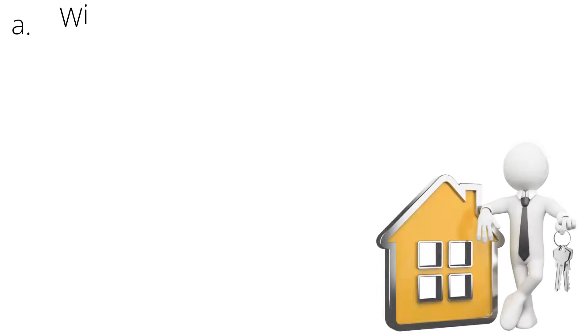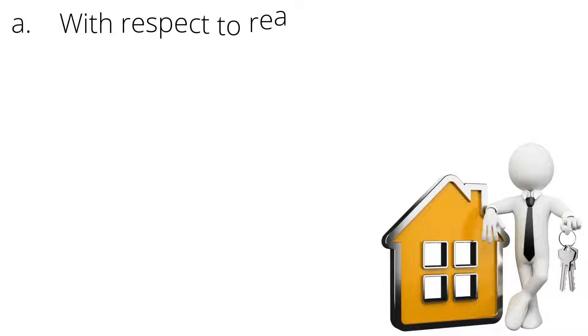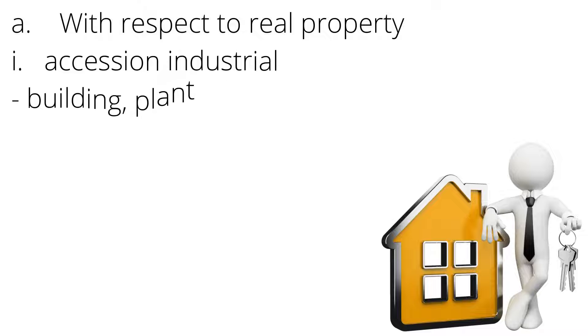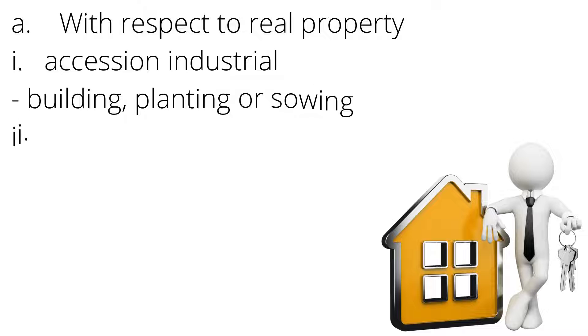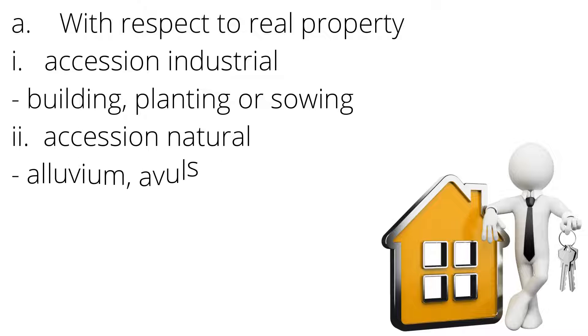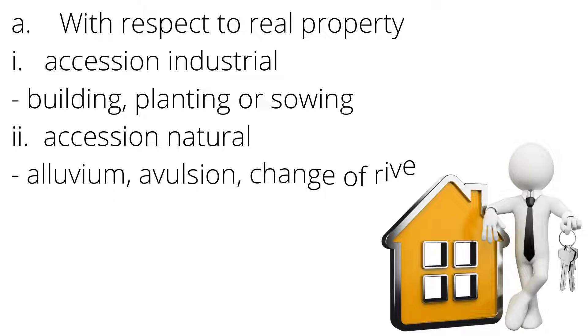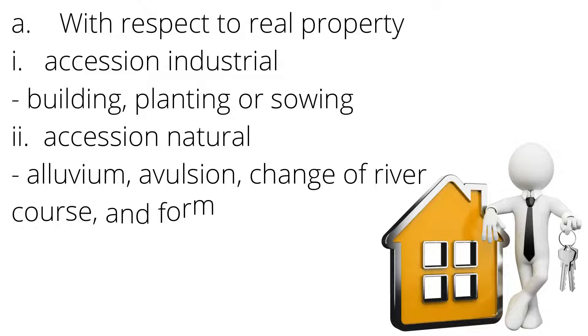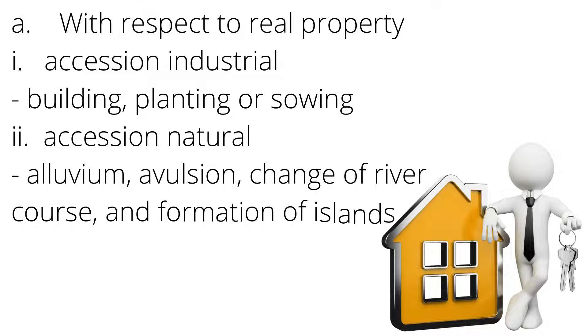With respect to real property: (i) Accession industrial — building, planting, or sowing. (ii) Accession natural — alluvium, avulsion, change of river course, and formation of islands.